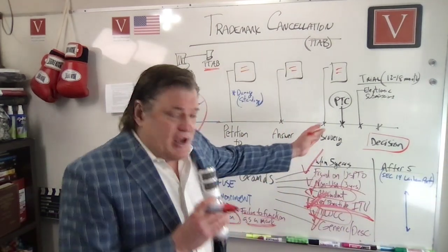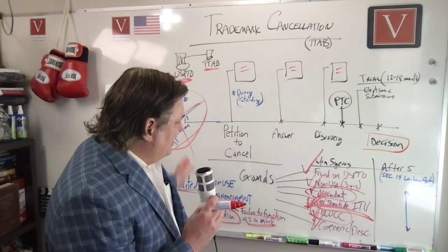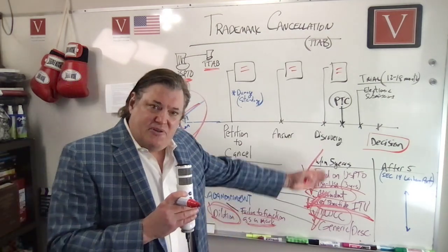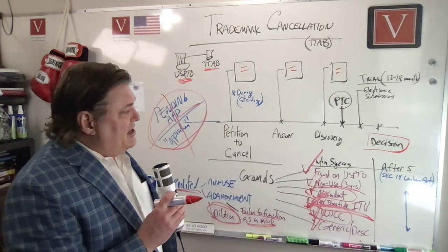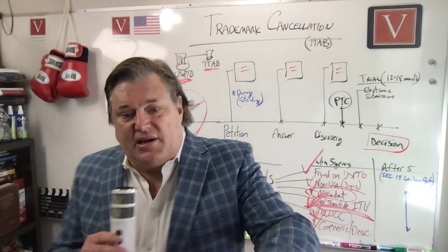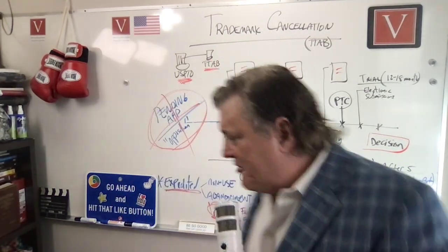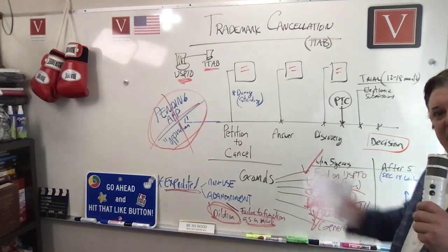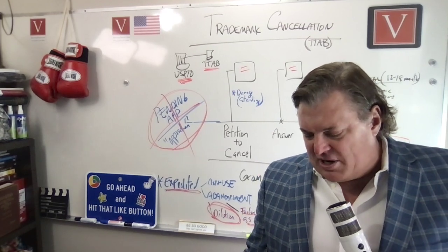So those are the challenges if the trademark is registered within five years. This is not an exclusive list, and this is not legal advice — just a starter to get you thinking about cancellation. After five years, there are certain grounds laid out in the Lanham Act. The trademark can become incontestable, making it much harder to contest, but there are some limited grounds where you can still try to cancel.